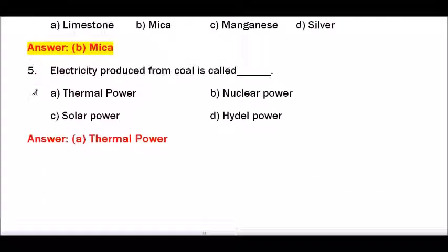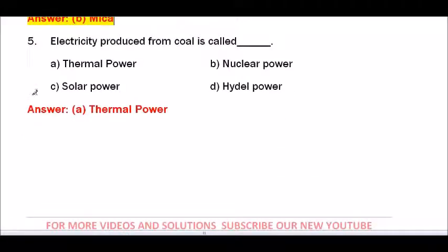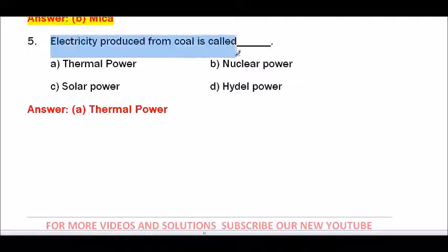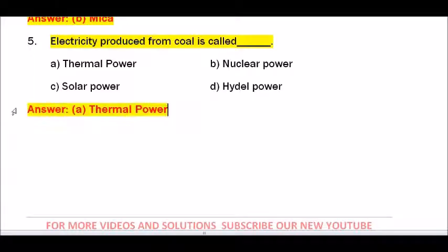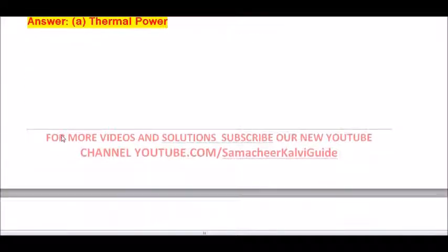Question number 5 — Electricity produced from coal is called dash. Options are thermal power, nuclear power, solar power, hydel power. The answer is thermal power.